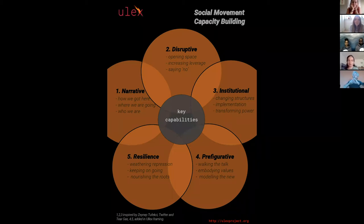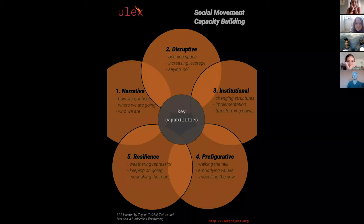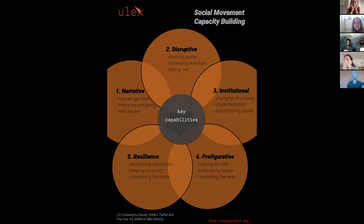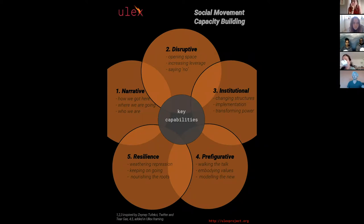This slide shows how we think about capacity building for social movements. We use a framework thinking about what are some of the key capabilities that social movements need in order to be effective. We work with five of these. The first one is narrative — the ability for our movements to tell the story of what's going on, how did we get here, the vision of where we could go, and importantly, who are we as a movement.